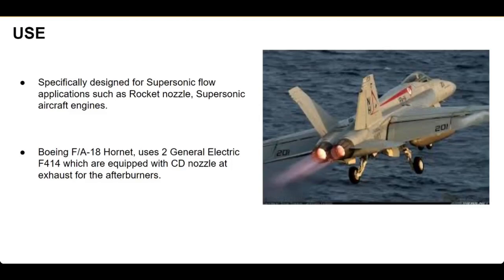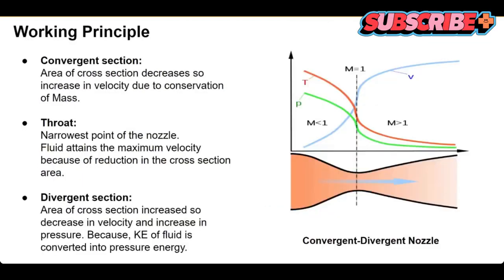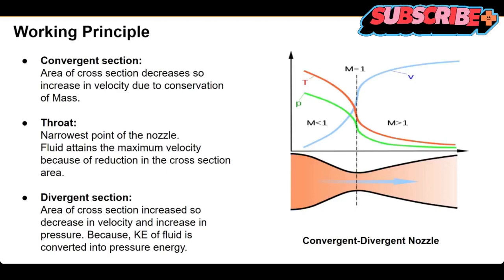Nowadays, in supersonic aircraft engines such as the F/A-18 Hornet by Boeing, it uses two General Electric F414 engines that create a tremendous amount of thrust to propel the fighter jet. These also use convergent-divergent nozzles in their afterburners to vector the thrust output, and the pilot can use it whenever he needs that extra thrust. This was my video on the CD nozzle, also known as the de Laval nozzle. If you liked the video please give a thumbs up, comment any queries, share with friends, subscribe to Layman Engineering, and see you in the next video.